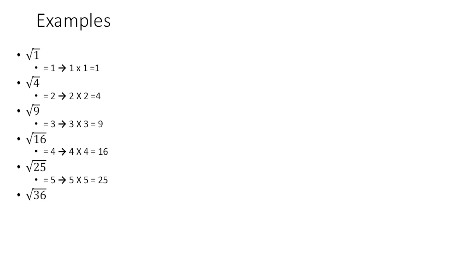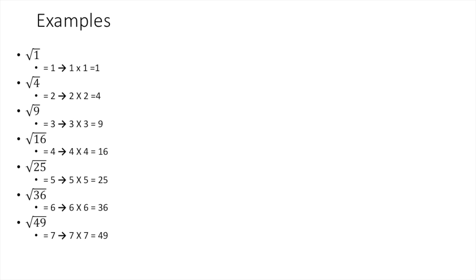Square Root of 36 is 6, because 6 times 6 equals 36. Square Root of 49 is 7, because 7 times 7 equals 49. Square Root of 64 is 8, because 8 times 8 equals 64.